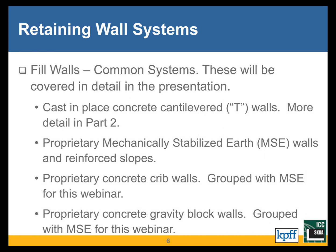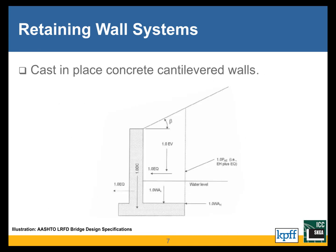For fill walls, the common systems are cast-in-place concrete retaining walls and three proprietary system types: mechanically stabilized earth walls (MSE), proprietary concrete crib walls, and proprietary concrete gravity block walls. An example shown is a typical schematic section through a concrete cantilever retaining wall.